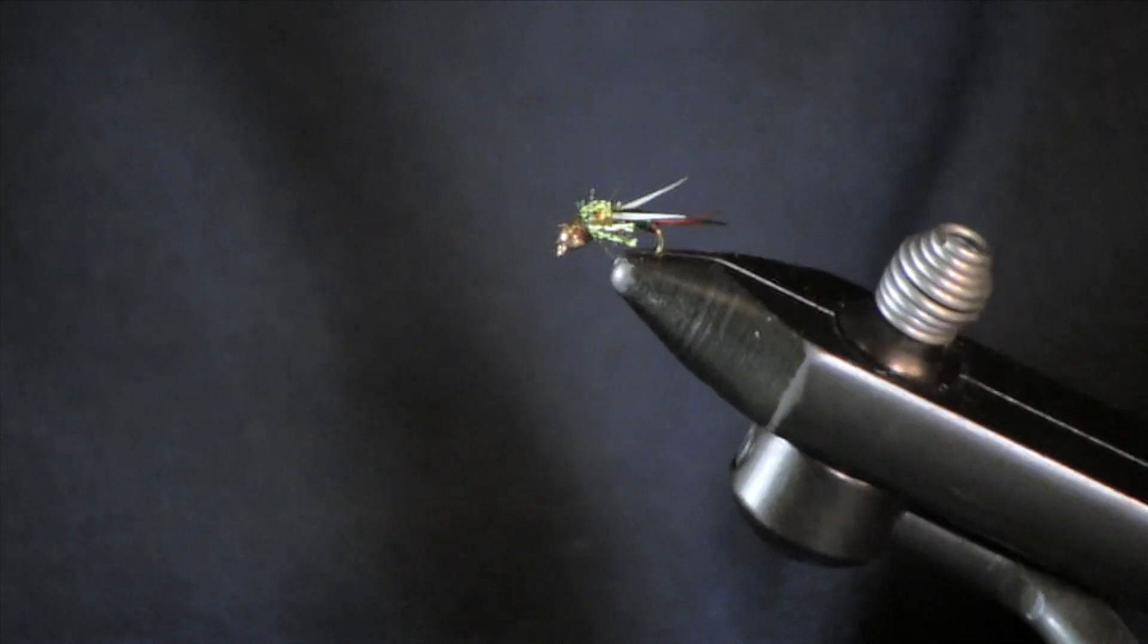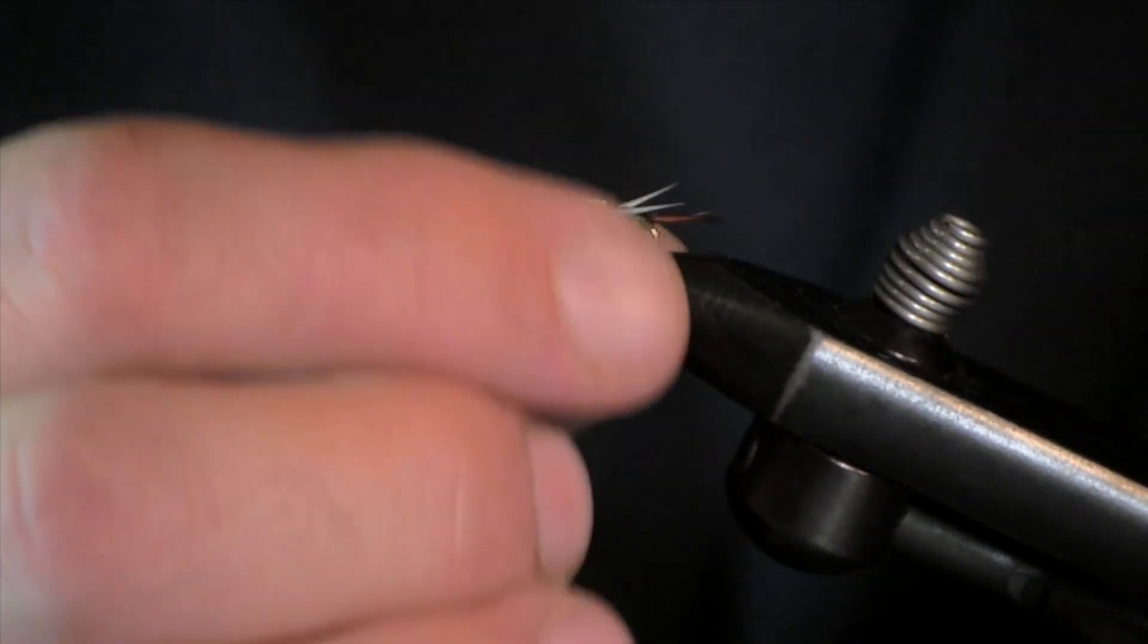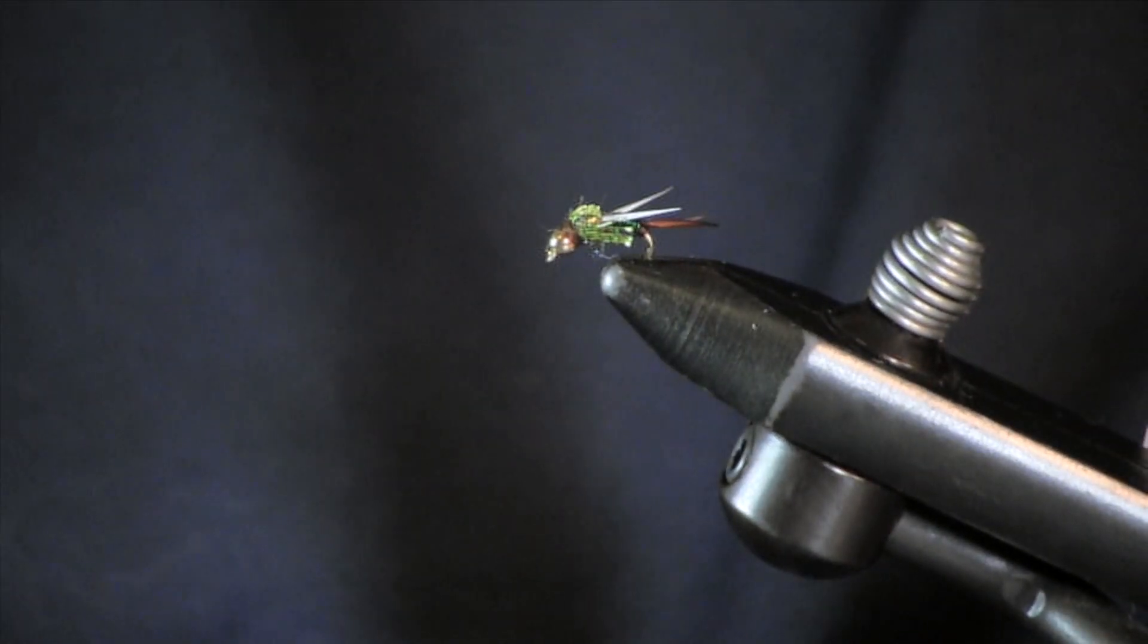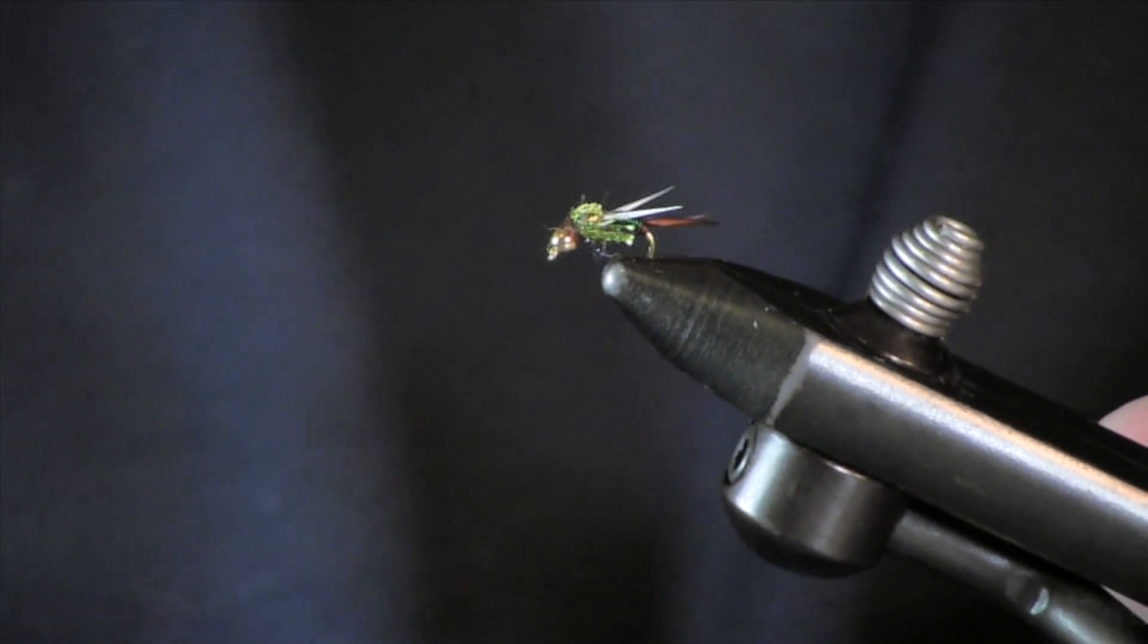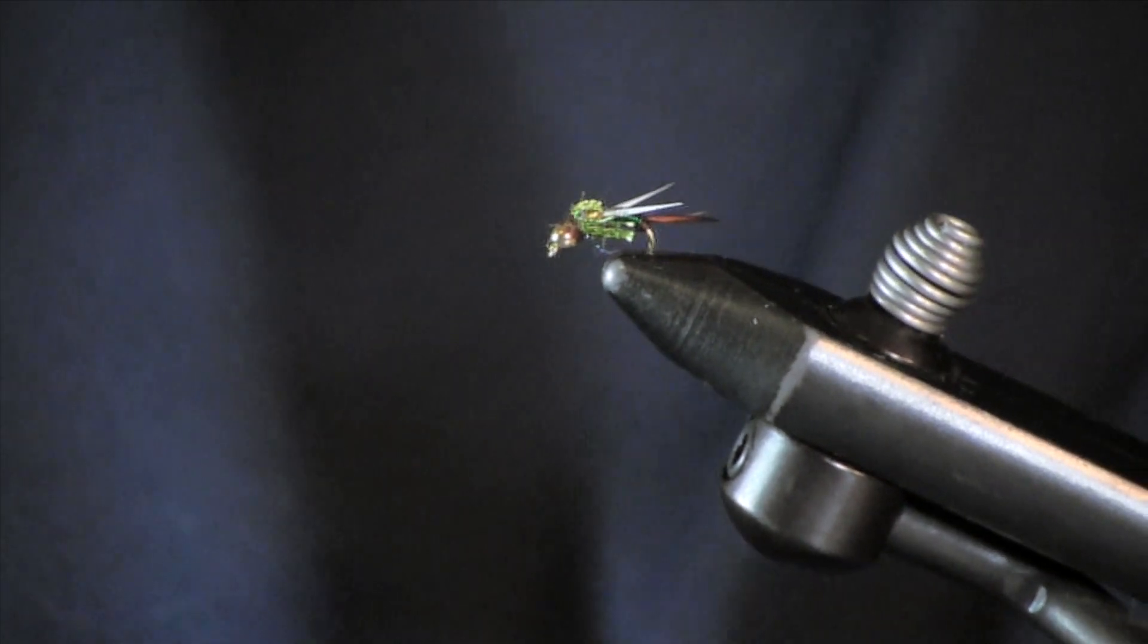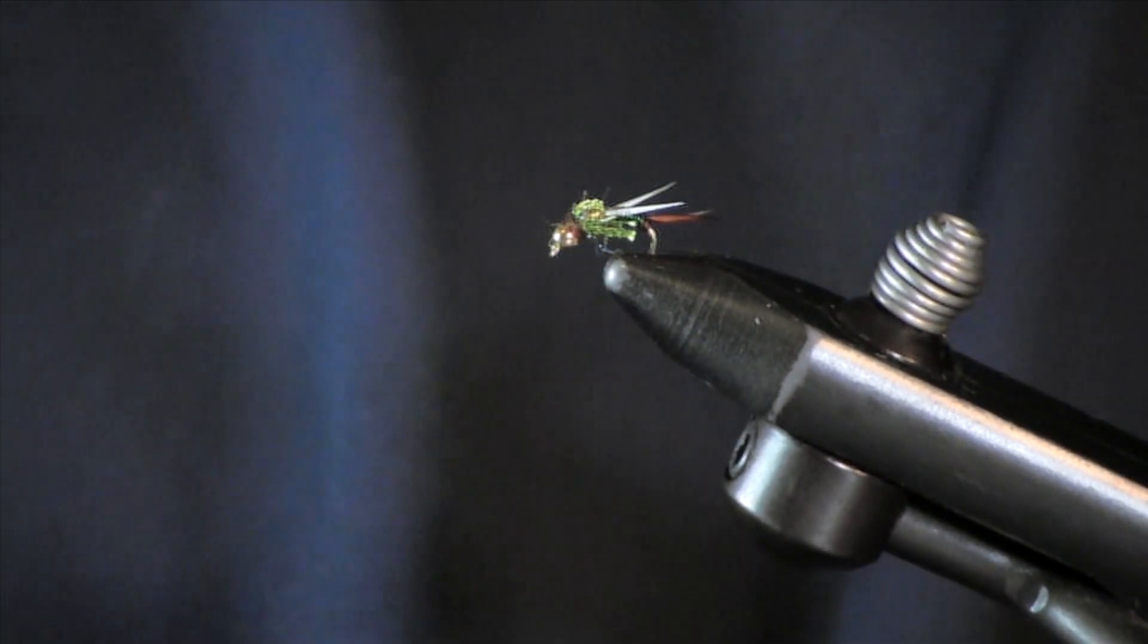You can see you have the finished fly here. You got your legs, your wings. It is a standard copper john except not your standard colors.